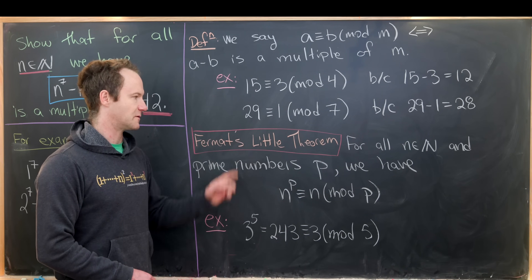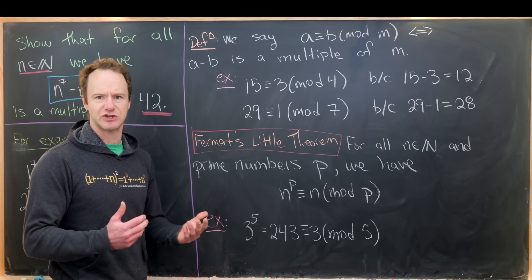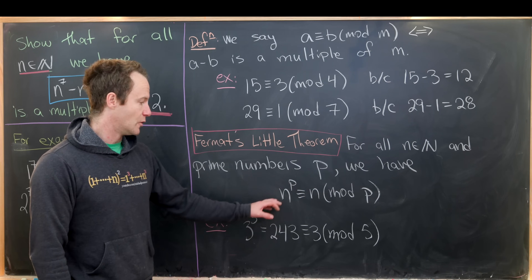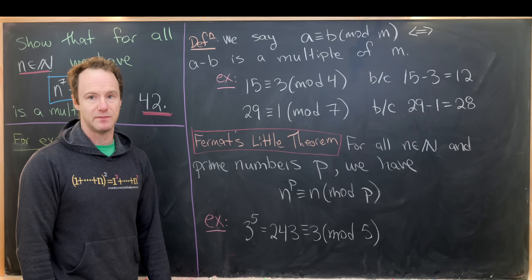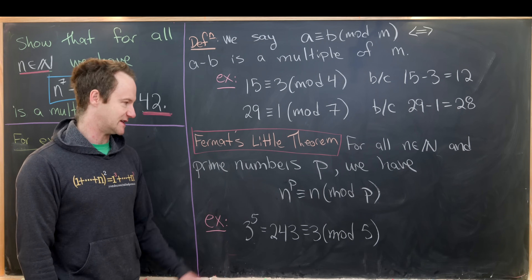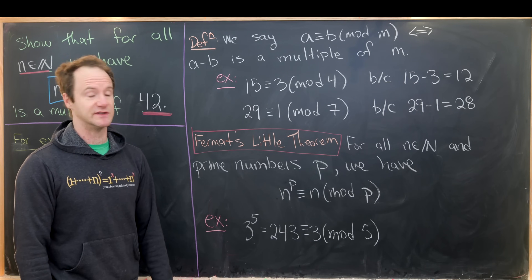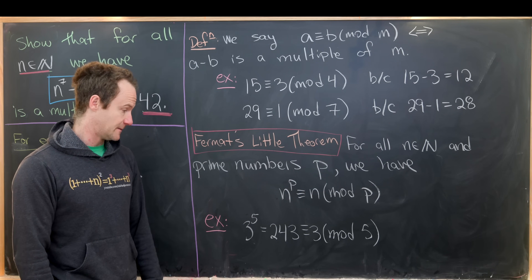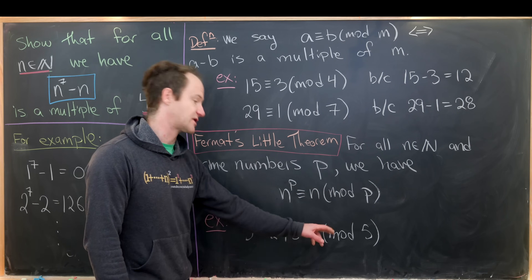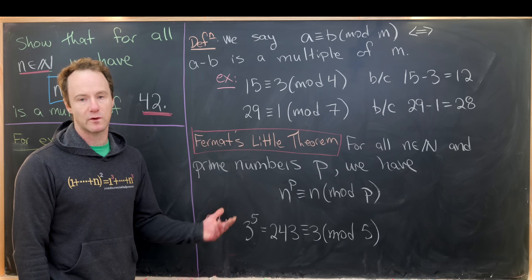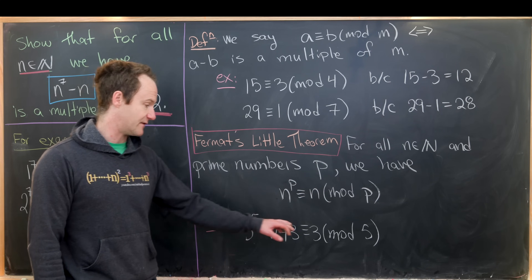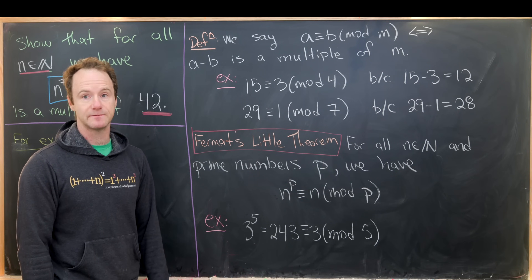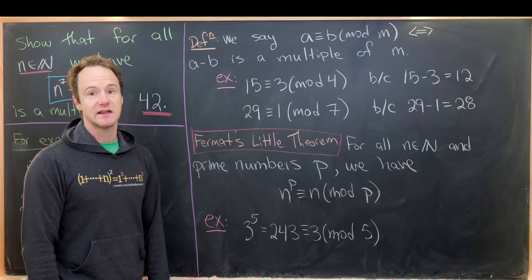We're going to use a result called Fermat's Little Theorem — it has a generalization called Euler's Theorem, which I've done in previous videos. It says: for all natural numbers n and prime numbers p, we have n to the p is congruent to n mod p. This theorem may seem completely devoid of real-world application, but it's actually really important to modern-day cryptography like code writing. For example, if we take 3 to the 5th power, that's 243. You can see that 243 is 3 mod 5, because it's 3 more than 240, which is a multiple of 5. So 3 to the 5 is 3 mod 5, just like n to the p is n mod p for all natural numbers n and primes p.